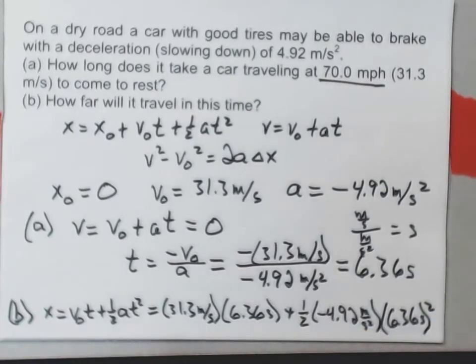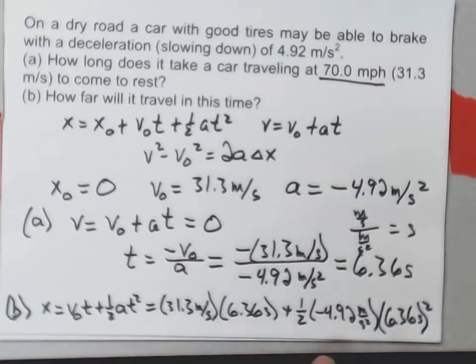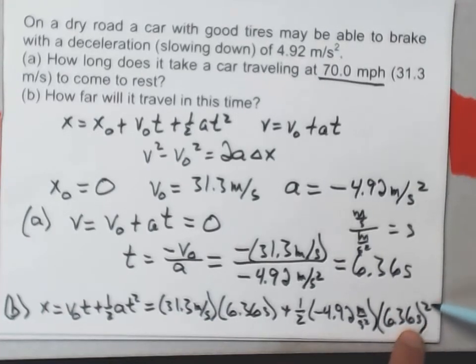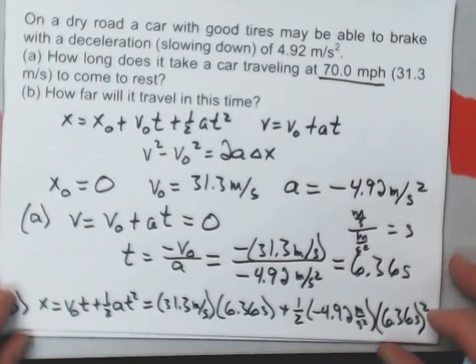Look at this carefully for the units. If I multiply meters per second times seconds, I'll get meters. That's a distance. If I multiply meters per second squared times seconds squared, I'll also get meters. So I can combine those two. They have the same units.